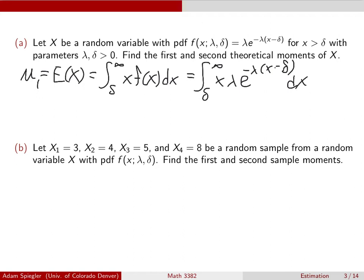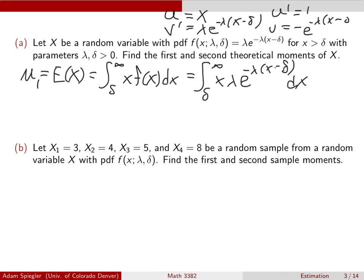Here x is the variable and the parameters are treated as constants. We apply integration by parts with u = x and v' = lambda * e^{-lambda(x-delta)}, so u' = 1 and v = -e^{-lambda(x-delta)}. The resulting integral can then be evaluated, and skipping those details, the first moment comes out to delta + 1/lambda.